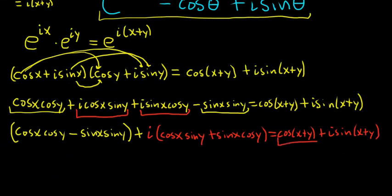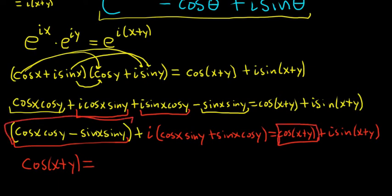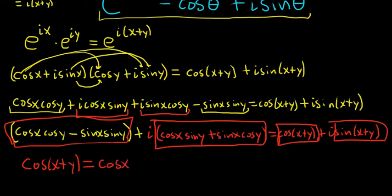So cosine of x plus y is equal to this. Because two complex numbers are equal when the real parts are equal. So this must be equal to this. And then when the imaginary parts are equal. That would mean that cosine of x plus y is cosine x, cosine y, minus sine x, sine y.